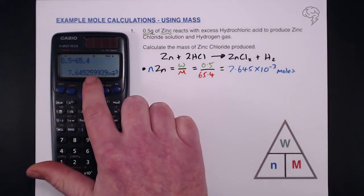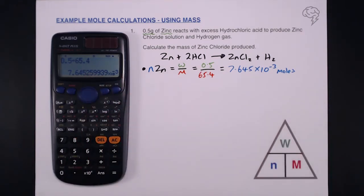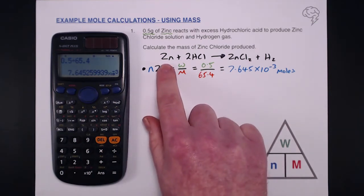7.645 times 10 to the minus 3 moles. I'm going to leave that in my calculator even though I've rounded it slightly. I'm going to keep the accurate number in my calculator.